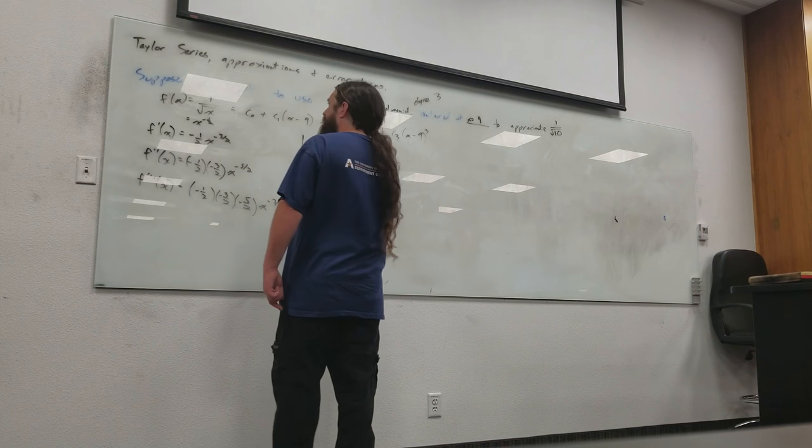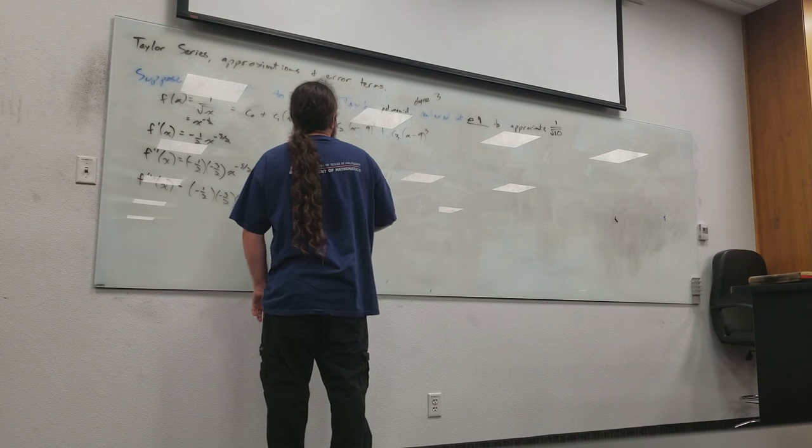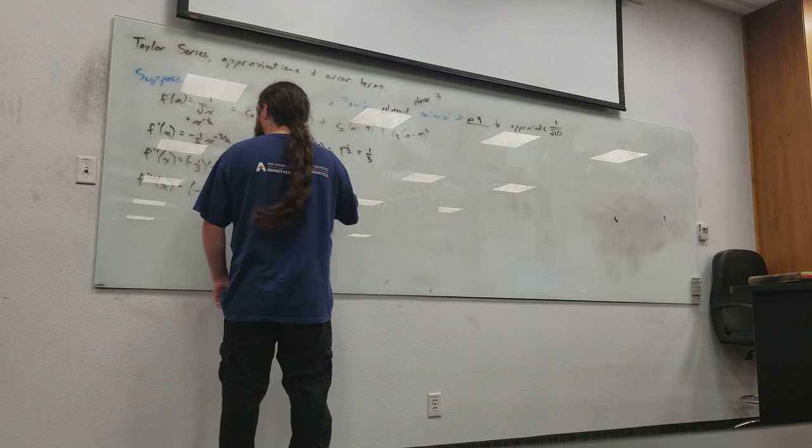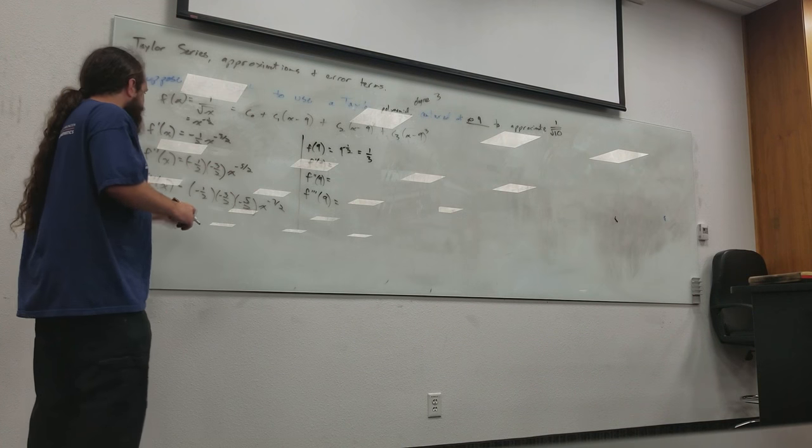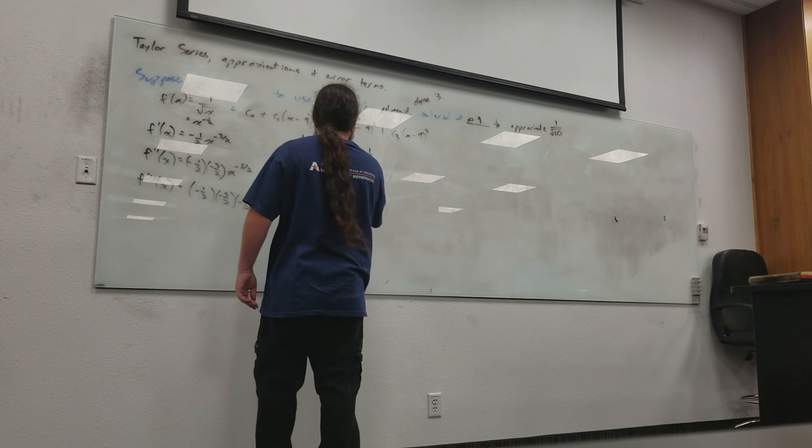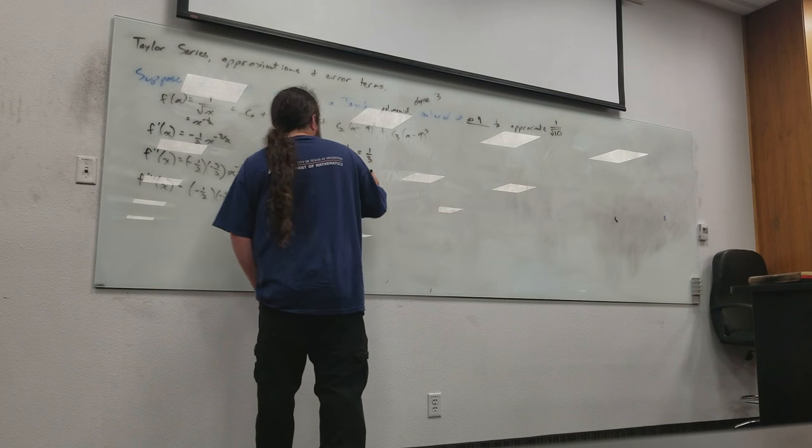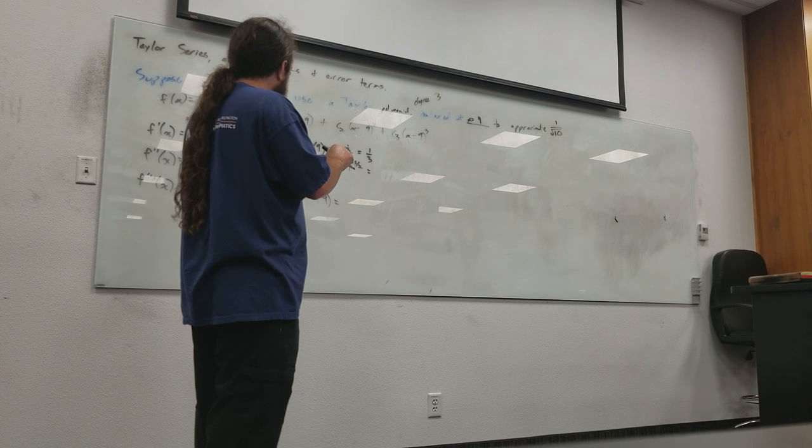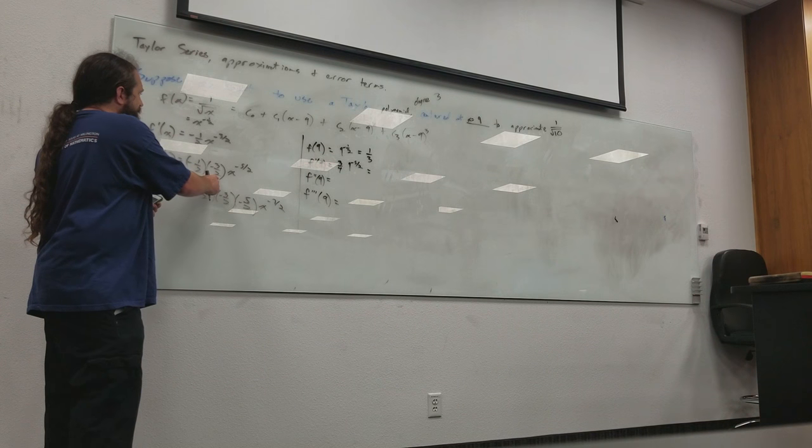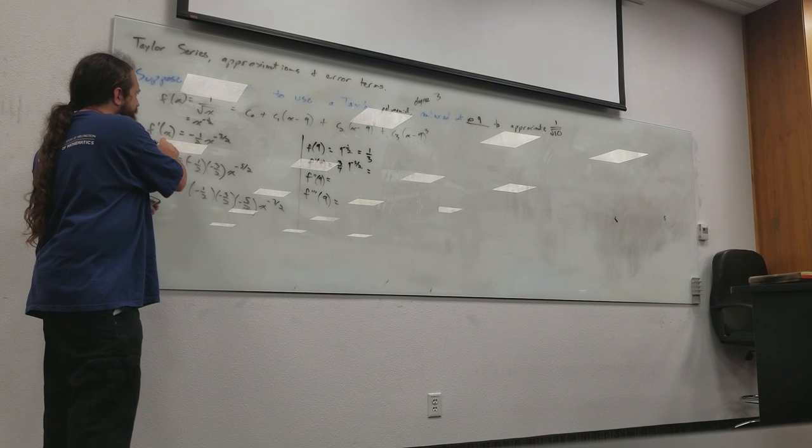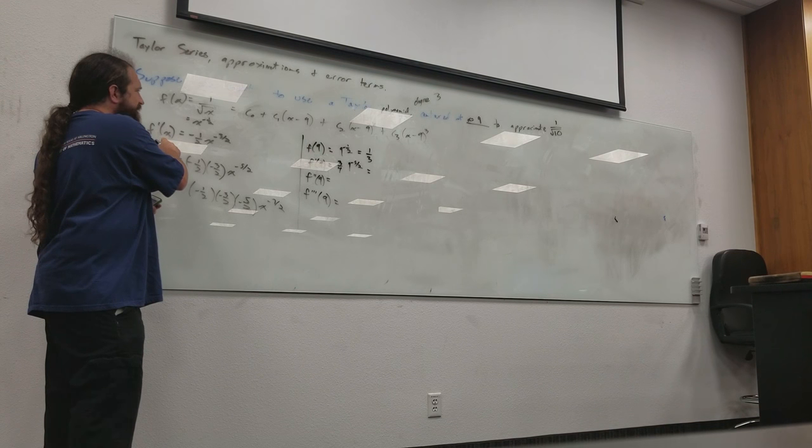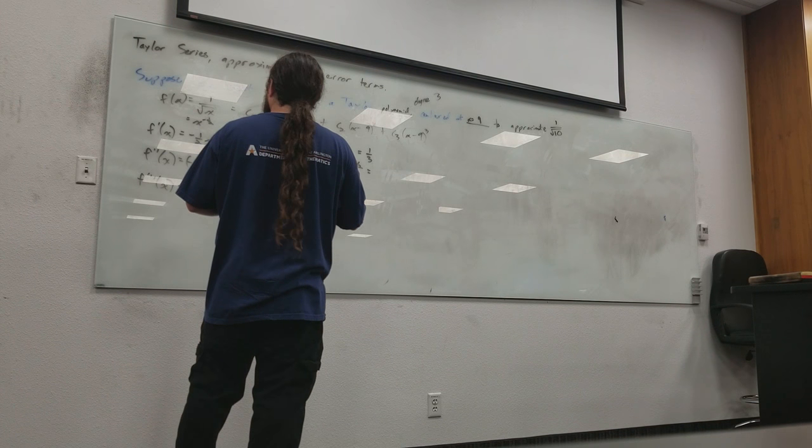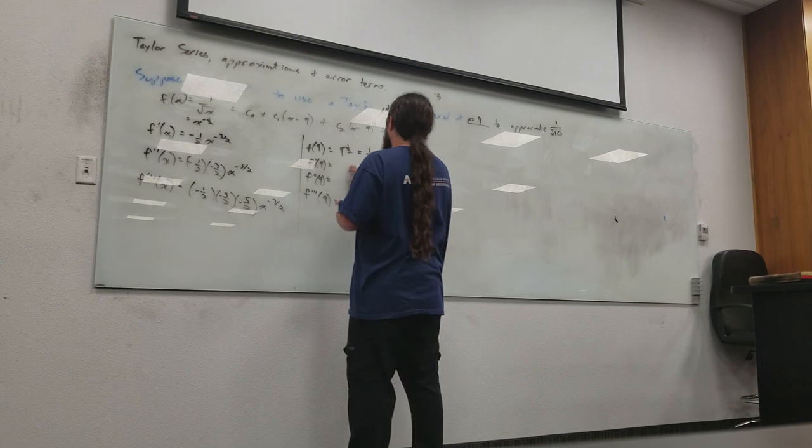So f prime of x... Now f of x is, what, x to the negative one-half? Okay, so f prime of x is negative one-half times x to the negative three-halves. f double prime is negative one-half times negative three-halves times x to the negative five-halves. f triple prime is negative one-half times negative three-halves times negative five-halves times x to the negative seven-halves. Okay. Now what we need is, what is f of nine, f prime of nine, f double prime of nine, and so on. Because that's how we're going to get our coefficients, right? Okay.